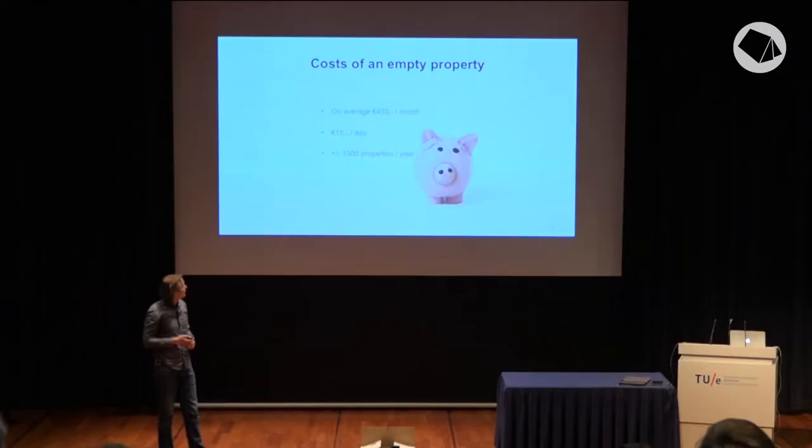So what are the costs of an empty property? On average, a property costs around 450 euros each month — that's 15 euros a day. And for this case, Woon Friesland has around 1,300 properties they have to process every year.